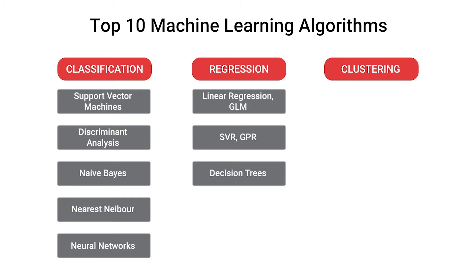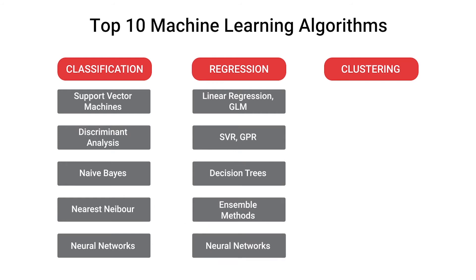Similarly, decision trees can be used for classification and for regression purposes. Ultimately, the decision tree is also a supervised learning technique. Similarly, ensemble methods can be used for classification purposes and can also be used for regression purposes.